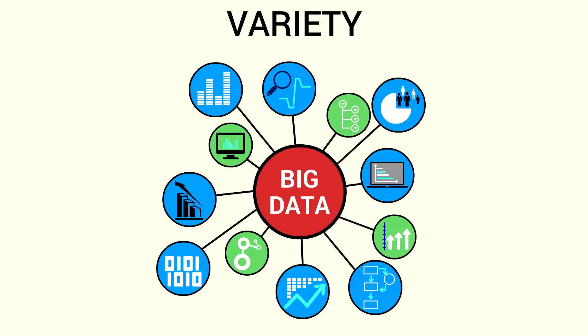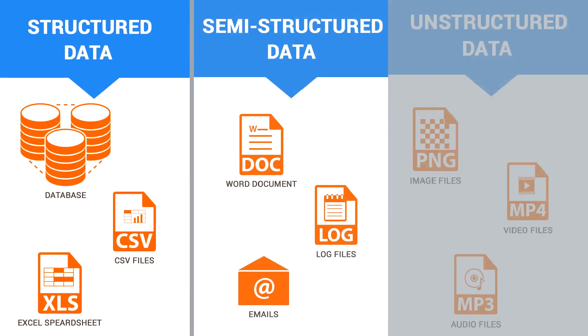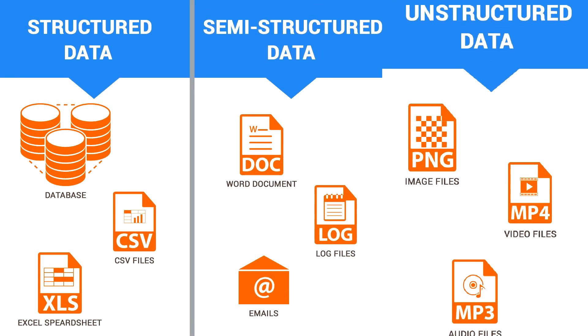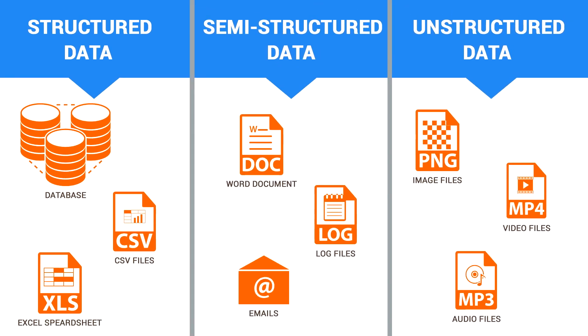Variety indicates the different types of data being generated. The differences could be because of the sources from which this data is captured, or because of the form it's available in. Data may be available in structured, semi-structured, or unstructured form. You will learn more about variety of data in the next segment.